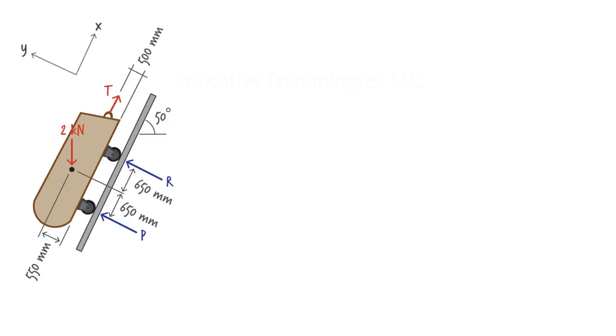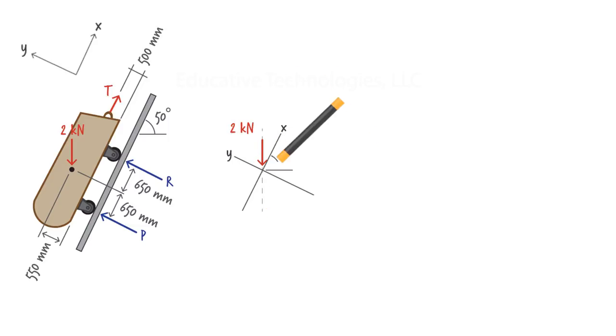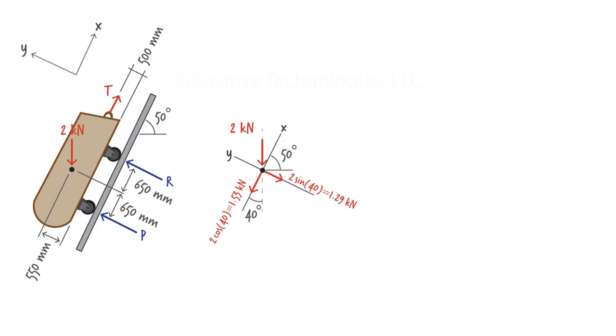Let's establish a convenient coordinate system, defining the x-axis along the inclined plane. So, except for the 2 kilonewton force, all the forces are acting in the x or y direction. We can rewrite that force in terms of its x and y components. The 2 kilonewton force makes a 40-degree angle with the x-axis, so the y component of the force becomes 1.29 kilonewtons and its x component is 1.53 kilonewtons. Here is the revised free body diagram.